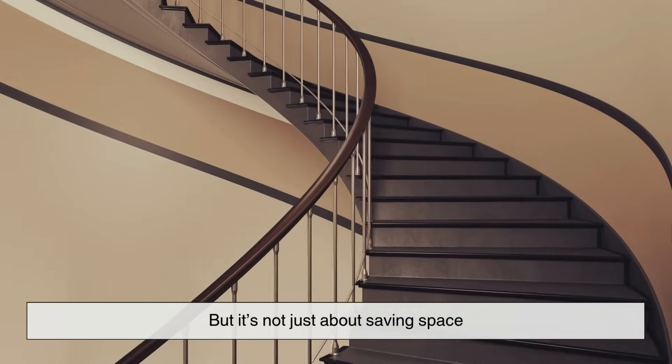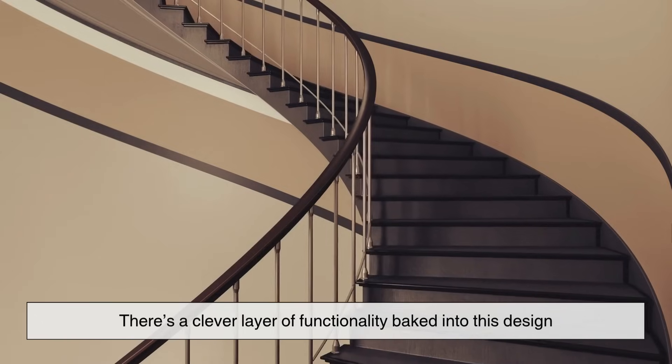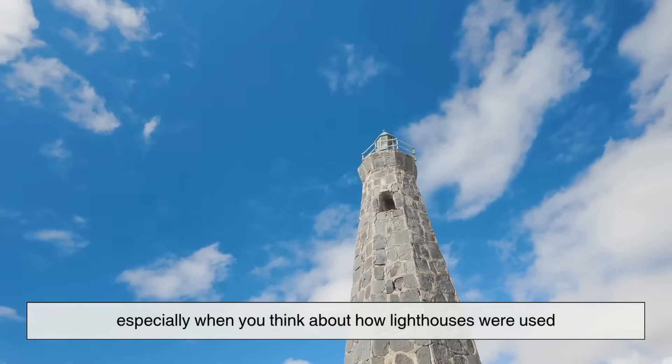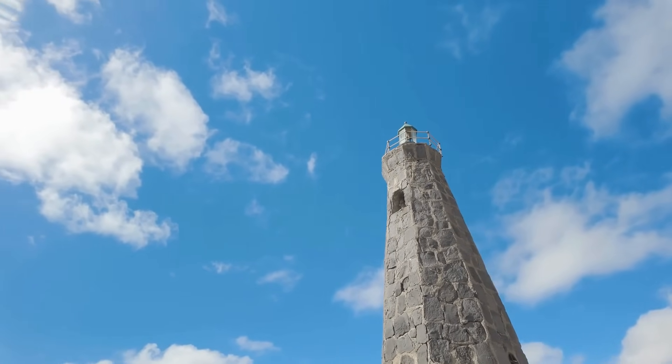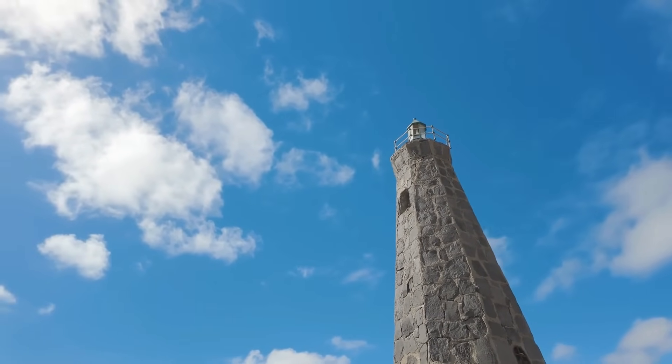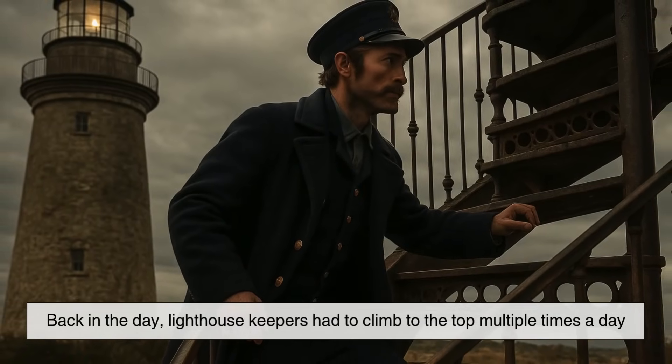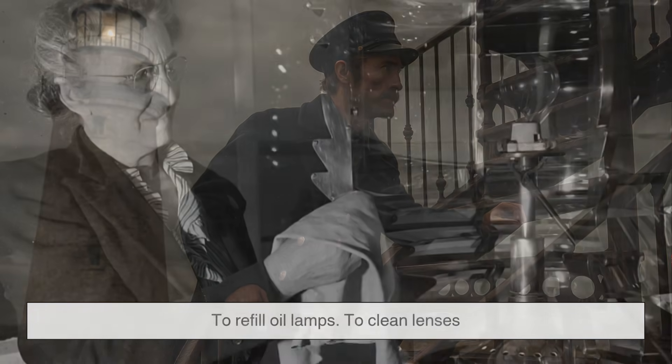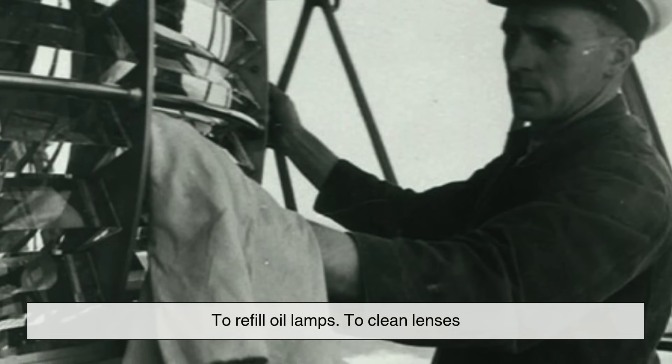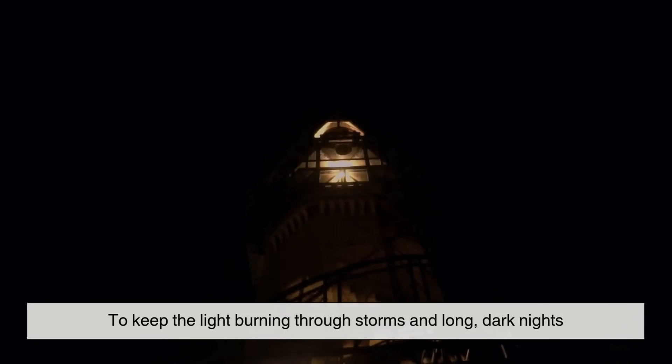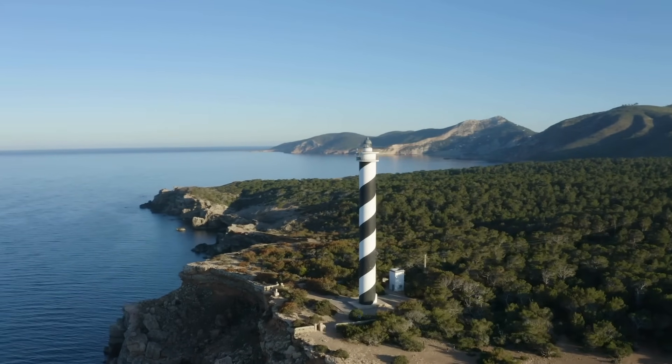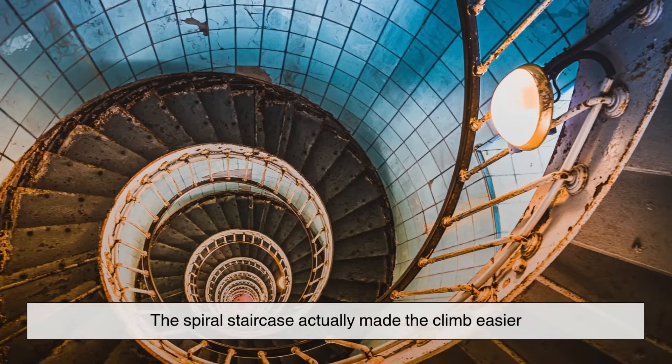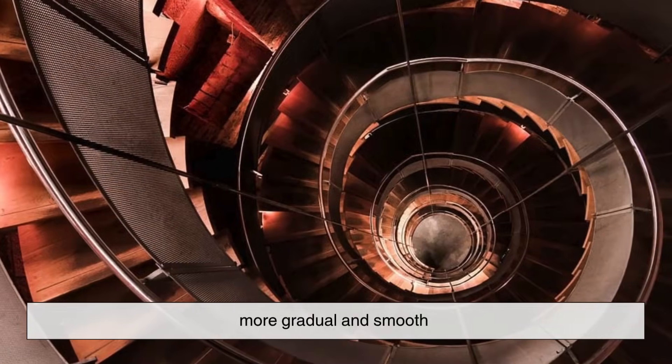But it's not just about saving space. There's a clever layer of functionality baked into this design, especially when you think about how lighthouses were used, and still are, in some places today. Back in the day, lighthouse keepers had to climb to the top multiple times a day to refill oil lamps, to clean lenses, to keep the light burning through storms and long, dark nights. These weren't short climbs. Some lighthouses are over 100 feet tall. That's a lot of steps. So the spiral staircase actually made the climb easier, more gradual and smooth, compared to a steep ladder or vertical stair.